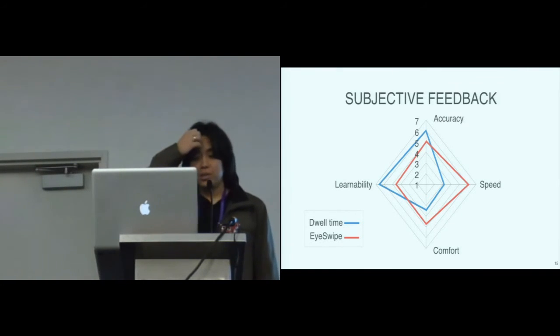Also, at the end of the experiment, we asked participants to rate their perception of learnability, accuracy, speed, and comfort from one for the worst to seven for the best. And this radar shows the average ratings for all participants. These results are also consistent with observations made by some participants that said that even though iSwipe was harder to learn, it got faster with practice.